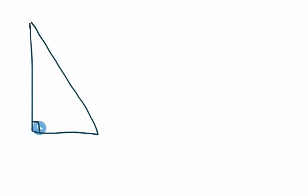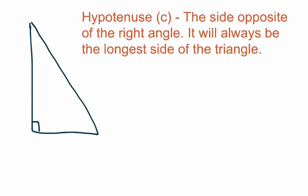Our right angle is right here, and here is the side that is opposite of the right angle. Notice that this side doesn't actually touch the right angle. These two sides form the right angle, but this third side does not touch the right angle at all. And that third side has a name — it's called the hypotenuse. This longest side that doesn't touch the right angle is called the hypotenuse, and we represent the hypotenuse with the letter C. The hypotenuse is the side opposite of the right angle, and it will always be the longest side of the triangle.